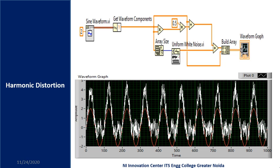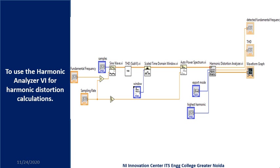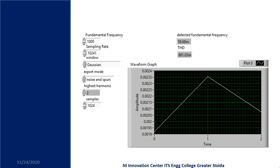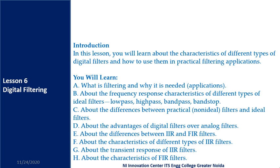We will discuss about harmonic distortions. We will write the code for this and try to add different kinds of noises like white noise and Gaussian noise. We will write a program to analyze the harmonic distortions and calculate them using these VIs. After that, there will be some fundamental frequency concepts — we will learn about noise and windows.